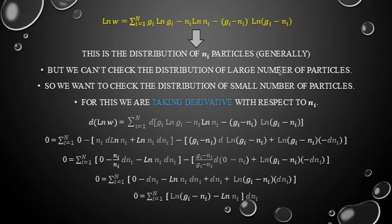This is the distribution of nᵢ particles. However, we want to check the distribution of a small number of particles rather than a large number. For this we take the derivative with respect to nᵢ. Taking d/dnᵢ of ln(W) and setting it equal to zero — the derivative of the gᵢ·ln(gᵢ) term is zero since it has no nᵢ dependence, so d/dnᵢ of ln(W) = 0.